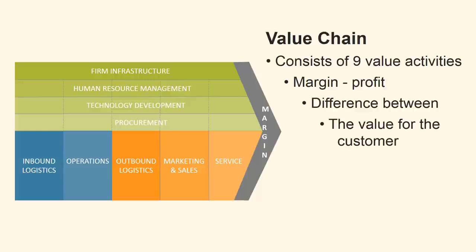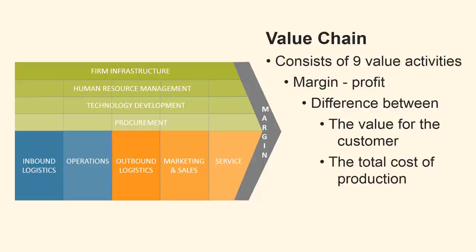The profit is equal to the difference between the value chain's total value, which is the value of the product to the customer — that is the price he is willing to pay for the product — and the total cost of producing the product, which is the total of the costs that are in the value chain's nine activities.